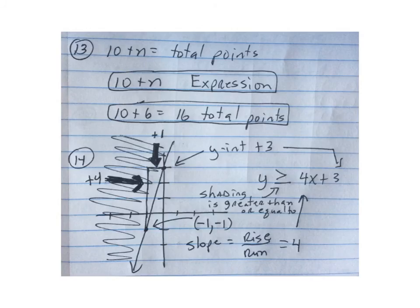On number 13, you had to write an expression to represent the total points, so 10 plus n, that's this expression here. Then it says you scored 10 and 16, so you had 16 total points if you scored 16 points in the second part.